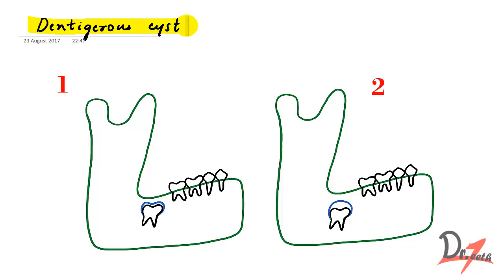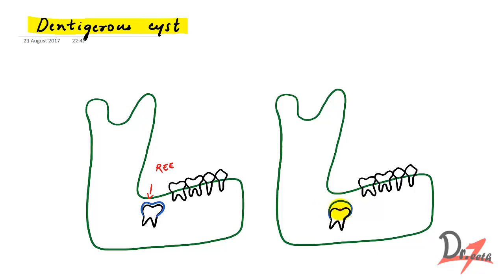In image one we see an impacted third molar, and in image two we also have an impacted third molar. We have a blue line in both — that blue line is the reduced enamel epithelium. The difference is that in image two, the distance between this blue line and the black line is greater, meaning the space has increased and that indicates the formation of a cyst.